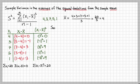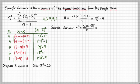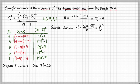So what is the sample variance? We apply the formula and fill in the parts. The sum of the squared deviations from the mean is 20. We divide by the number of data points minus 1, which is 5 minus 1 equals 4. So 20 divided by 4 equals 5. That is the sample variance.